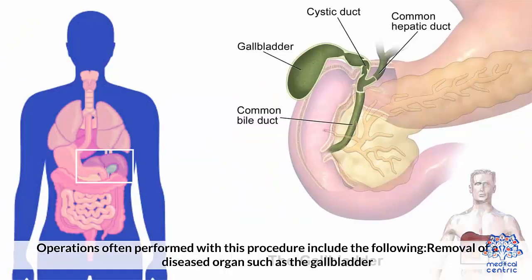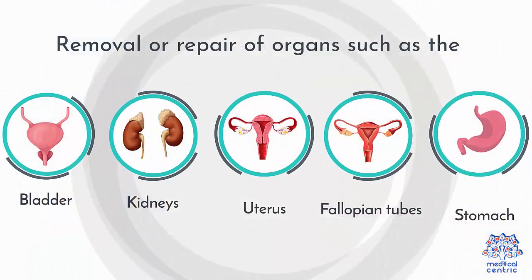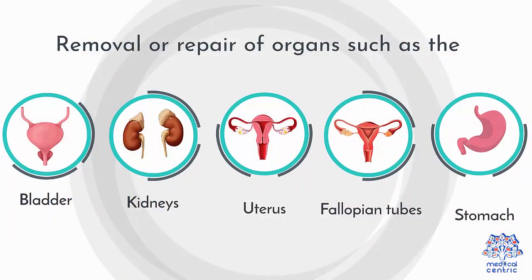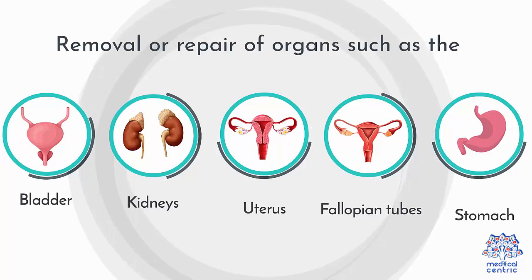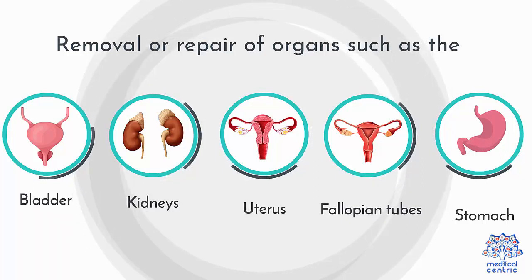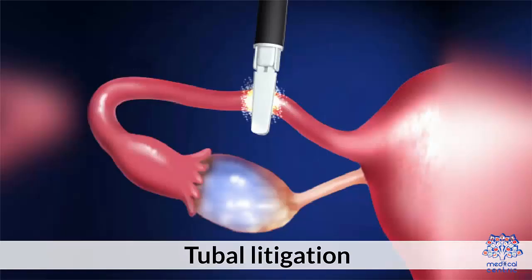Operations often performed with this procedure include the following: removal of a diseased organ such as the gallbladder; removal or repair of organs such as the bladder, kidneys, uterus, fallopian tubes, or the diseased part of the stomach; and tubal ligation.